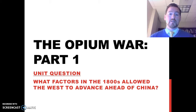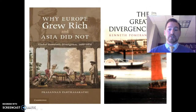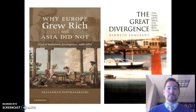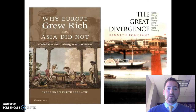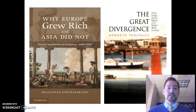Something happened beginning around 1800, and we're going to look at that. Historians have looked at this — I'll show you where historians have said, why did Europe grow rich and Asia did not? Another book talks about the Great Divergence, where you have two separate paths that divided: Western Europe went one way, and East Asia and China went a different way. We're going to talk about that over this unit, and I just want you to be thinking about it because it is important.